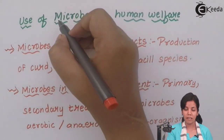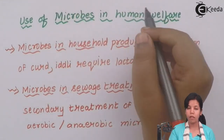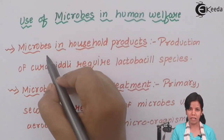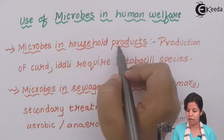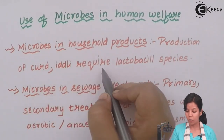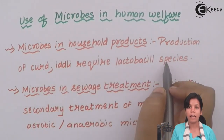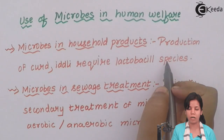We were studying the use of microbes in human welfare. Microorganisms can be used for various aspects. The first one is microorganisms in household products. Production of household things like curd and idli require Lactobacillus species, a bacteria that is naturally present and is used for the production of these household products.